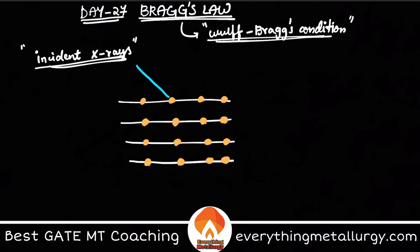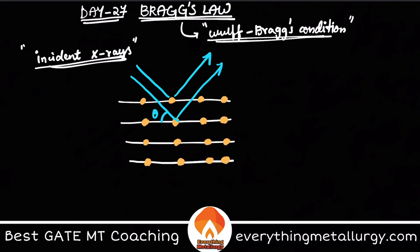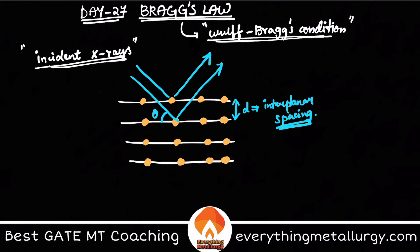What happens is my incident ray will come, hit the atom, absorb some energy, some ray can be transmitted, and the rest will be reflected back. Here, theta is the deflection from the plane itself, and d is the interplanar spacing — the distance between two planes within my crystal structure.